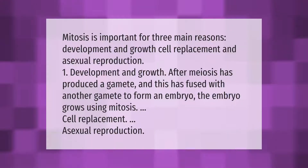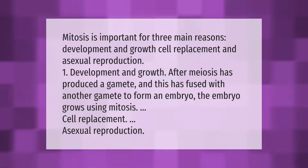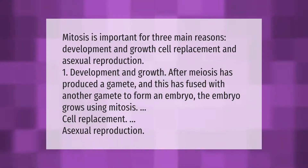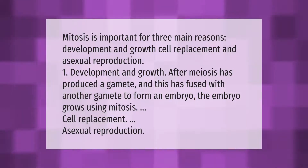Mitosis is important for three main reasons: development and growth, cell replacement, and asexual reproduction. After meiosis has produced a gamete and this has fused with another gamete to form an embryo, the embryo grows using mitosis. Mitosis also handles cell replacement and asexual reproduction.